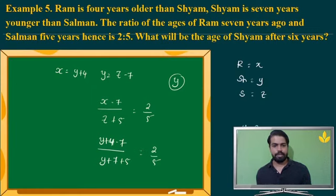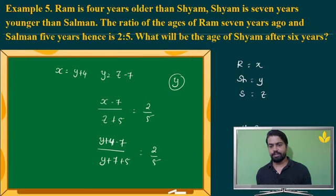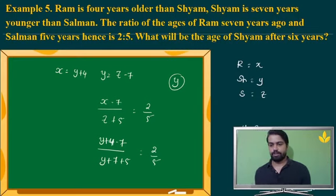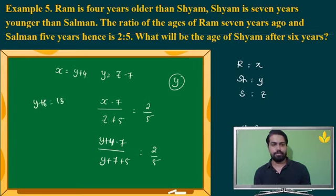Y minus 3 divided by Y plus 12 is equal to 2 by 5. Cross-multiplying: 5Y minus 15 equals 2Y plus 24. So 3Y equals 24 plus 15, which is 39. Therefore Y is equal to 13. The question asks Shyam's age after 6 years — Y plus 6 is 13 plus 6, so the answer is 19 years.